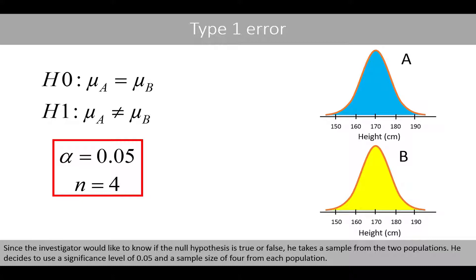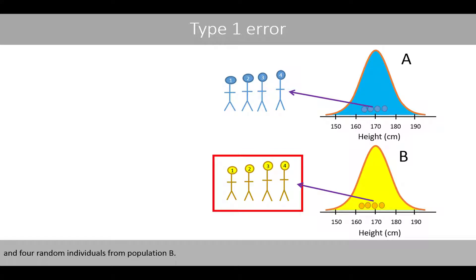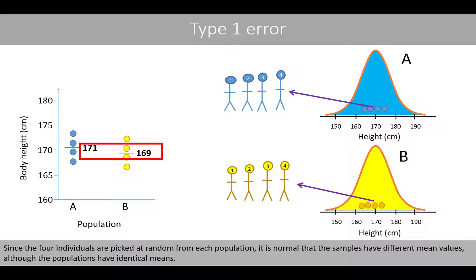Since the investigator would like to know if the null hypothesis is true or false, he takes a sample from the two populations. He decides to use a significance level of 0.05 and a sample size of four individuals from each population. He selects four random individuals from population A and four random individuals from population B, measures their body heights, and calculates the mean of the two samples. Since the four individuals are picked at random, it is normal that the samples have different mean values, although the populations have identical means.